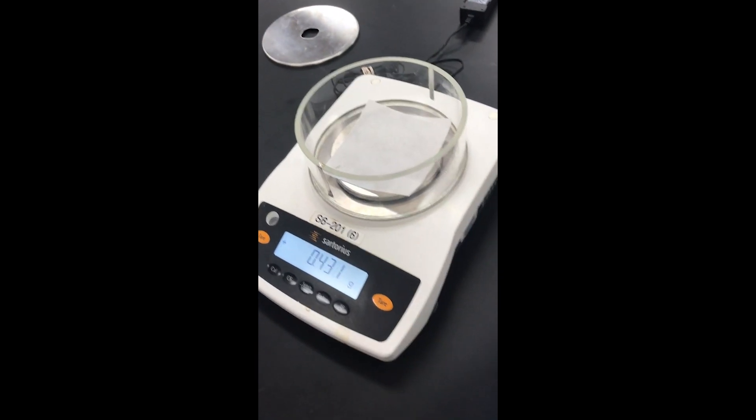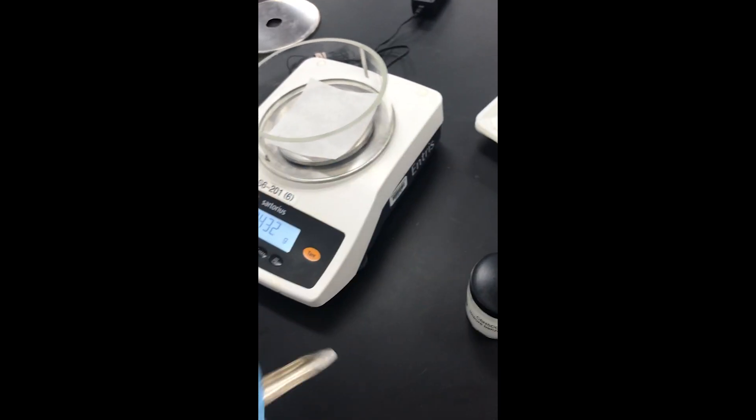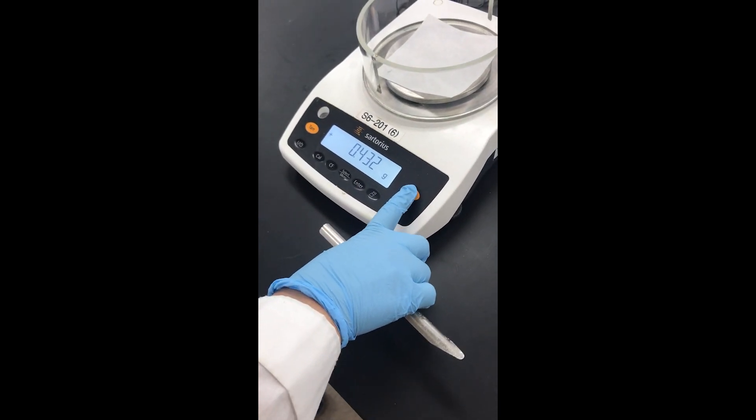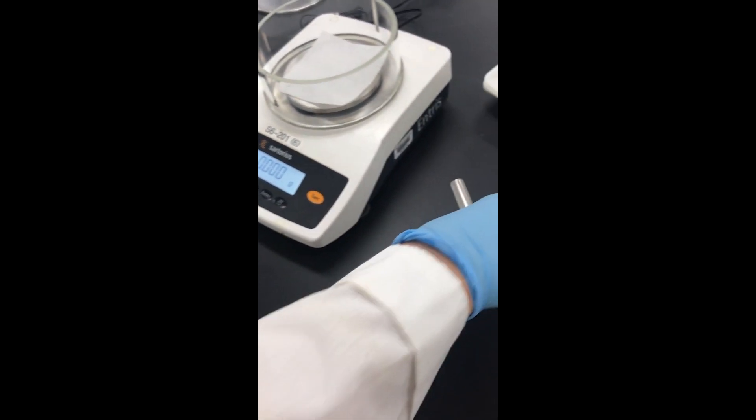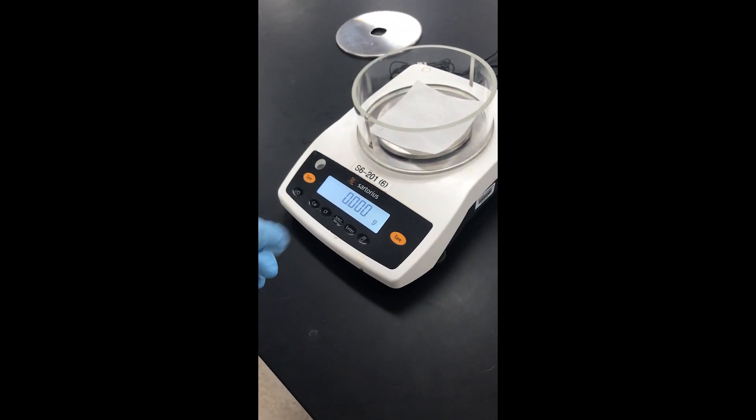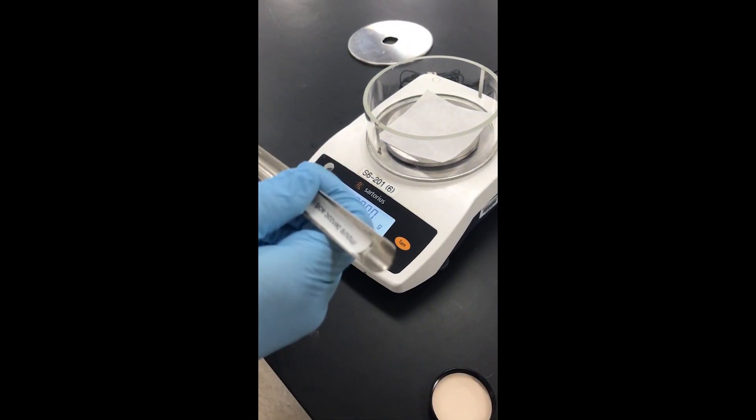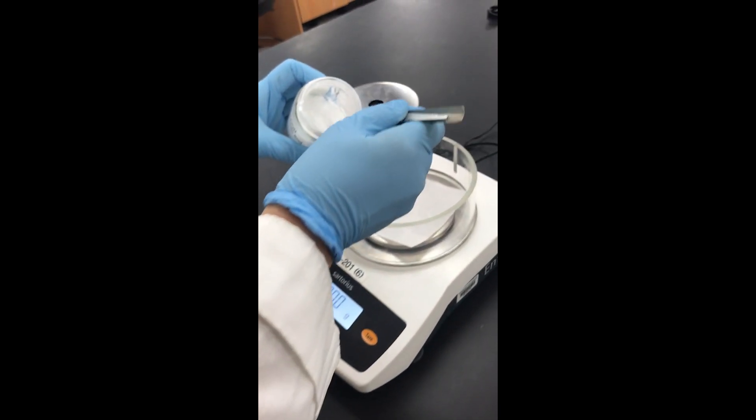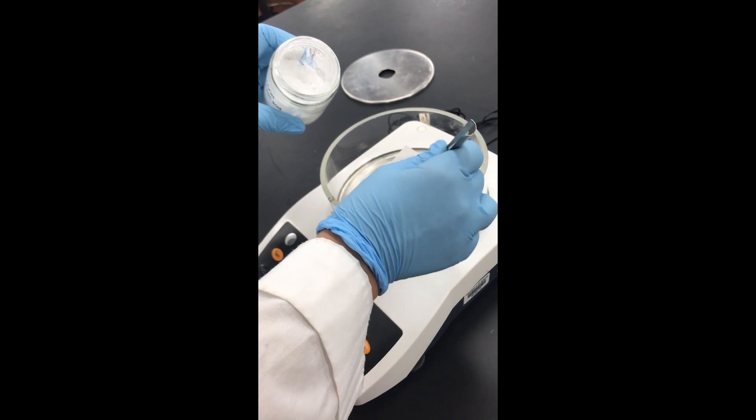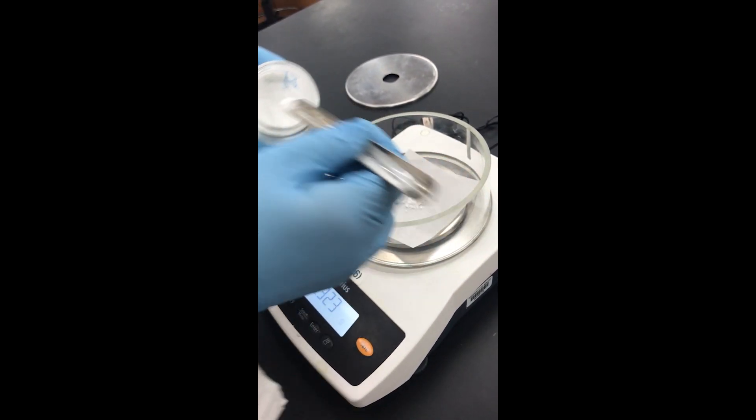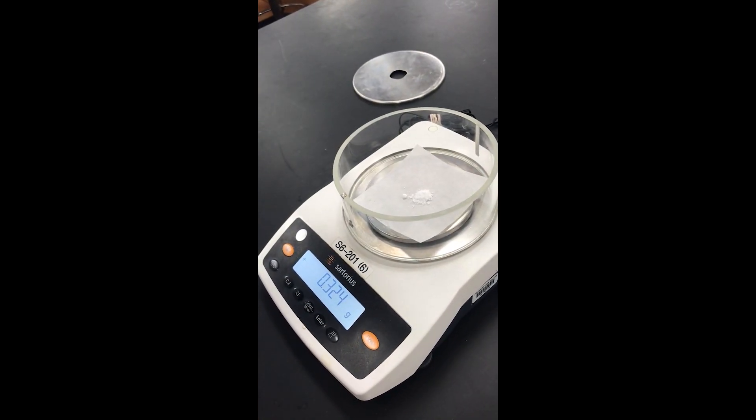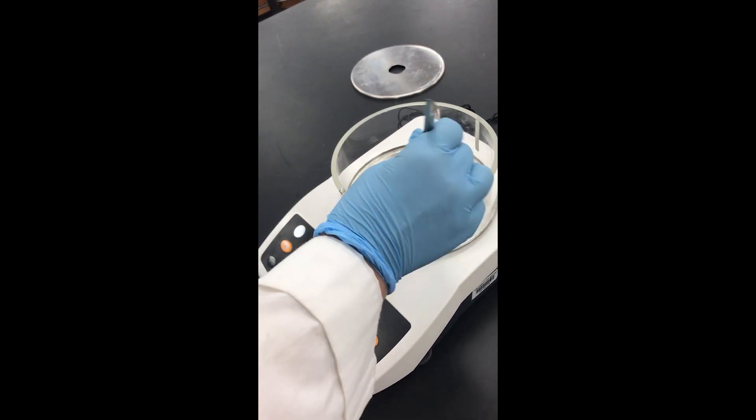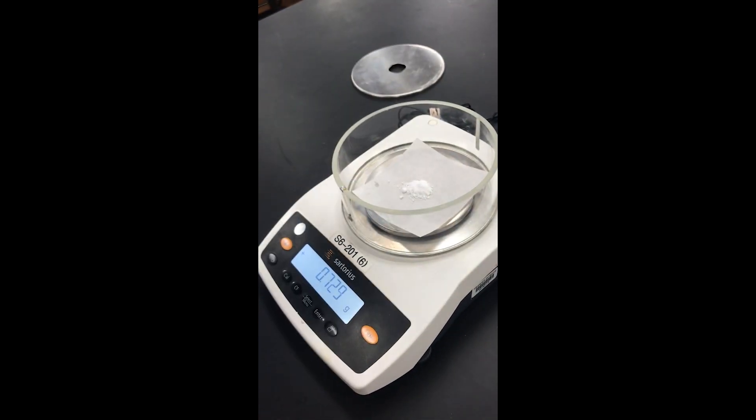I'll place that on there and tare the scale so that I don't have the mass of the weigh paper in with the mass of the solid. I'm going to get about a gram and carefully add some impure benzoic acid. So that's about 0.3 grams - gives me an idea how much to do.